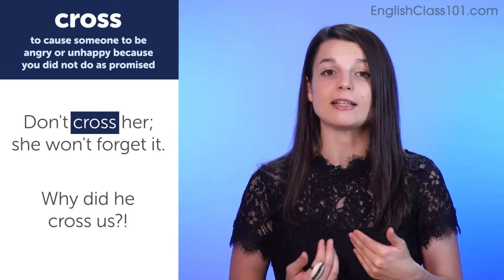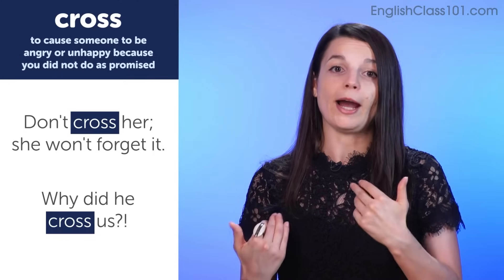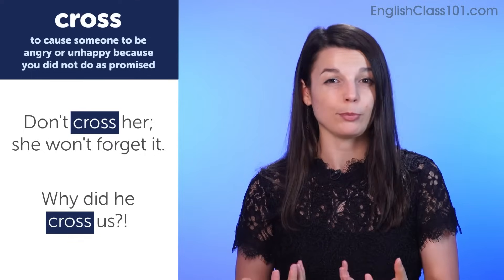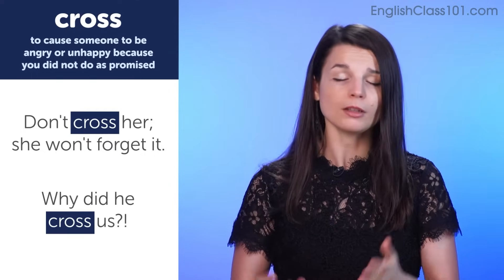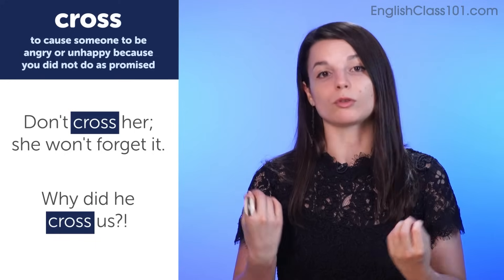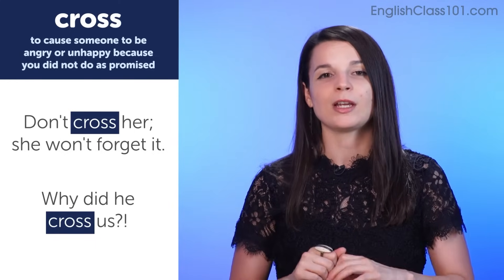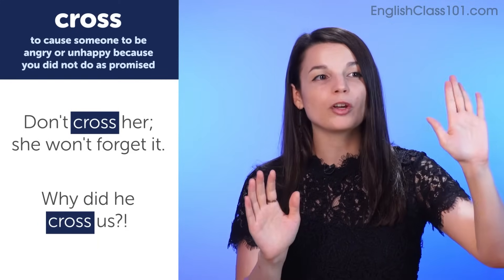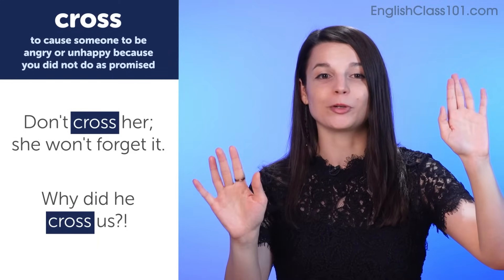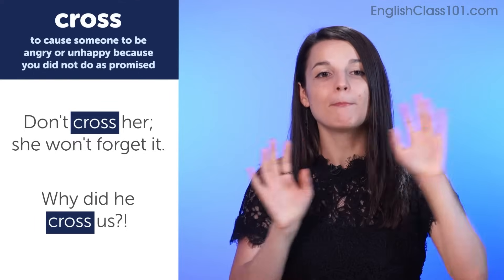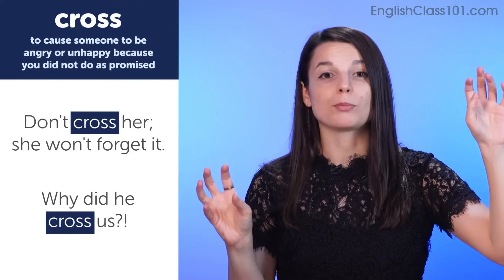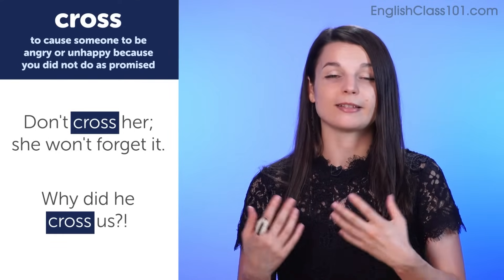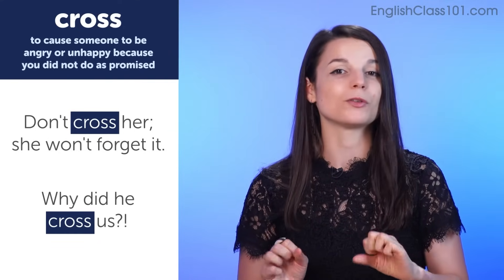In the second example sentence, 'Why did he cross us?' means why did he choose to do something different from what we agreed upon — and the speaker is probably upset. You might also hear the expression 'to double cross someone', which is a variation. To double cross someone is to make two deals at the same time: one agreement with one person, another with a different person, and you benefit while one or both people lose something. To double cross someone is typically regarded as a negative, even evil thing — a betrayal.